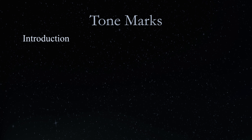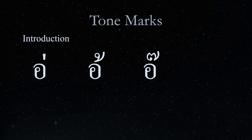There are four tone marks in Thai: MAI EIG, MAI TO, MAI THREE, and MAI JATTAWA. The most common tone marks are MAI EIG and MAI TO.